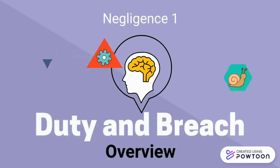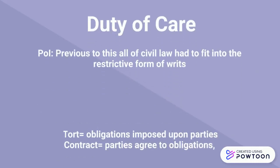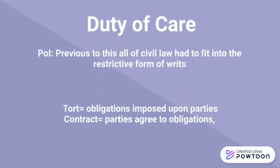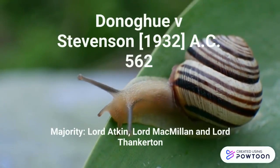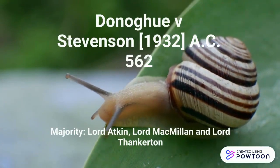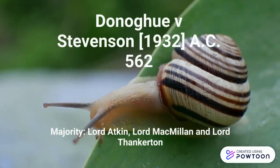The first week of negligence surrounds duty of care and breach of that duty. The first case that really established the duty of care requirement and showed a clear division between tort and contract was Donoghue v. Stevenson. This case involved a non-contractual party who was injured by a snail dissolved in a bottle.